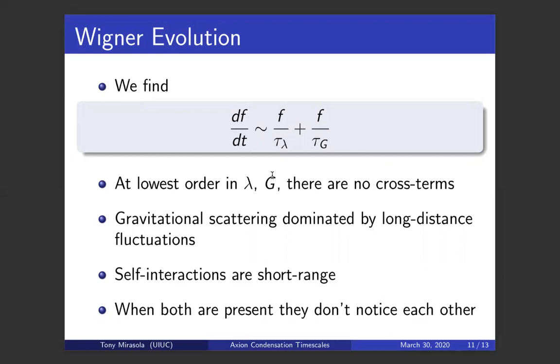When we look at lowest order, we see that there are these two terms and there's no mixing, there's no cross terms. The reason for this is because gravitational scattering is dominated by long distance fluctuations. This is actually an observation that was first made by Landau in a different context. He was studying plasmas, which also have a 1/r interaction, the Coulomb interaction. He demonstrated that the scattering process in plasmas was dominated by long distance fluctuations, and it's the same story here. But the self-interactions are short range interactions, it's a contact interaction, so it ignores the long range fluctuations.